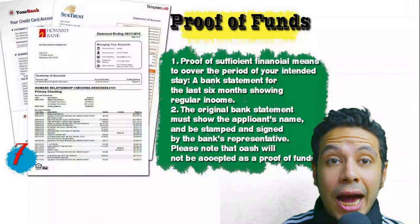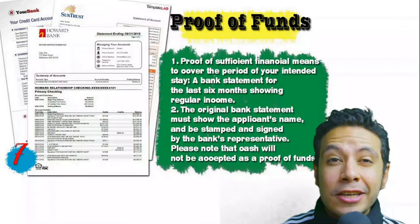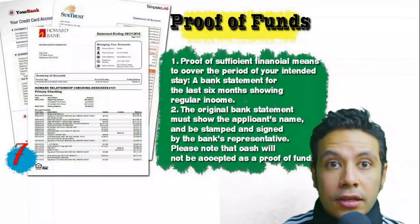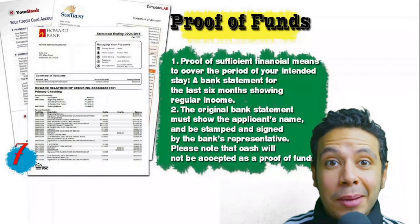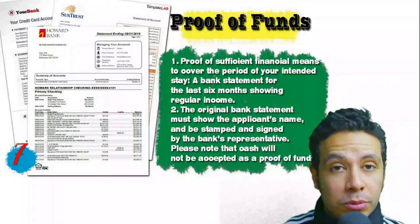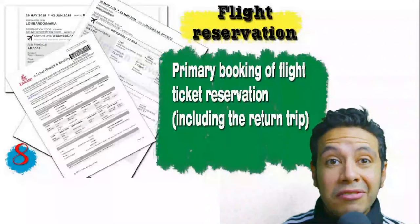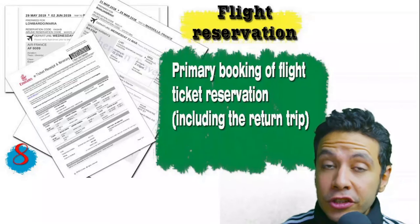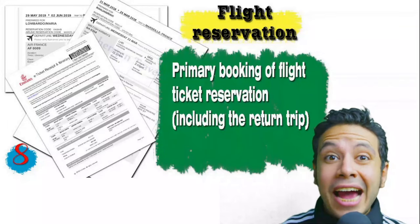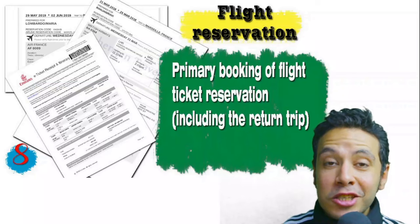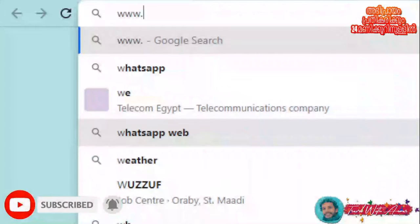You will also need to provide proof of sufficient funds — a bank statement showing your balance for at least six months. The original bank statement must show your name and be signed and stamped by bank representatives. Note that cash will not be accepted as proof of funds. You should also provide a flight reservation — an initial booking is usually acceptable, though in some minor cases a confirmed booking is required — and it must include a return ticket.